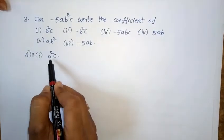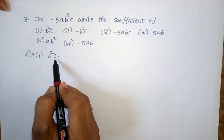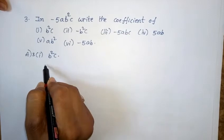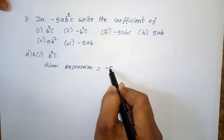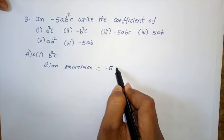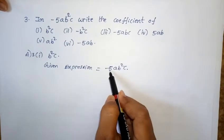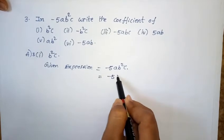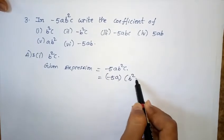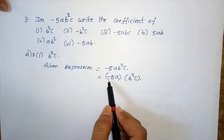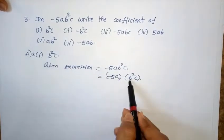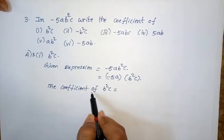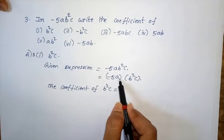Third problem, first one: find the coefficient of b²c. Given expression is minus 5ab²c, which can also be written as minus 5a into b²c. So the coefficient of b²c is equal to minus 5a.